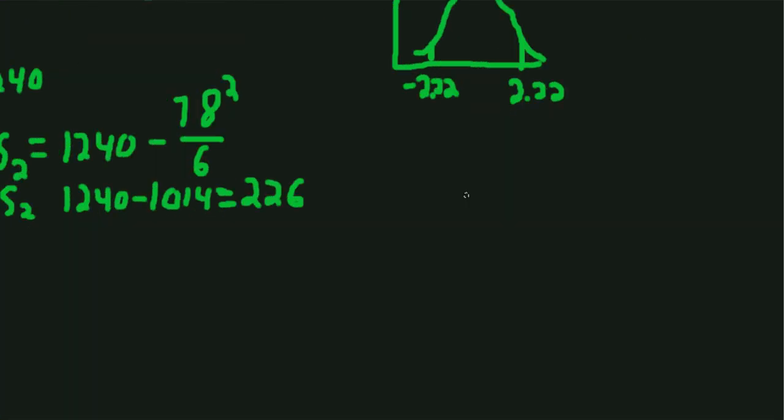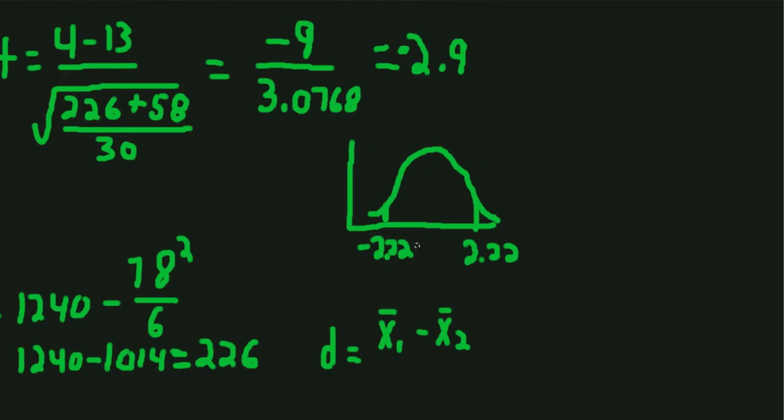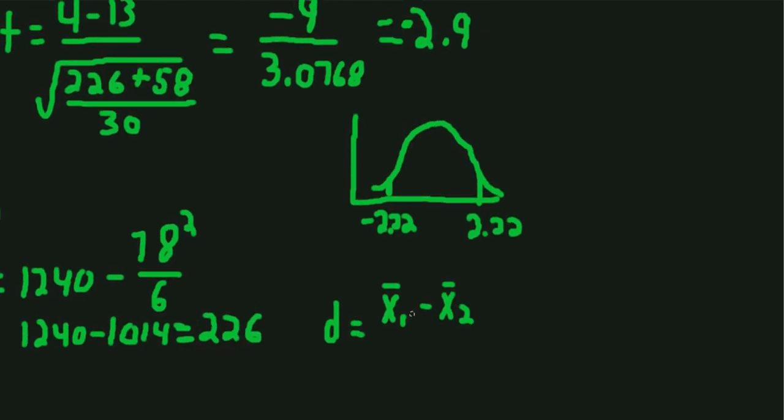I might also want to investigate the effect size. We'll look at Cohen's D for the independent samples t-test. Now there's various formulas for this, but we'll use one where we take the difference between the means, which we calculated to be negative 9.